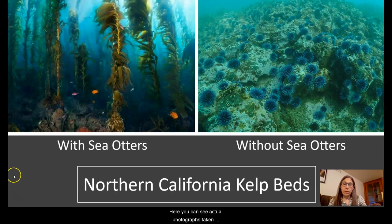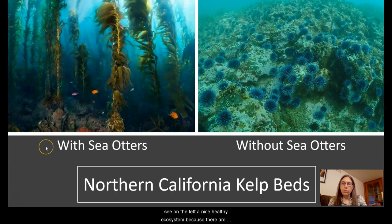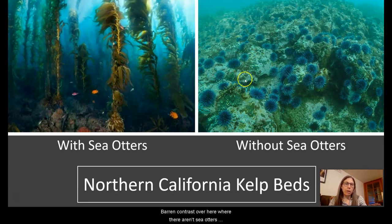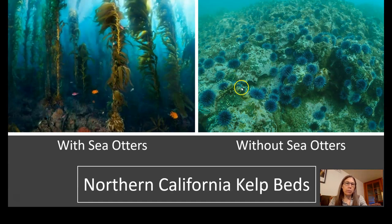Here you can see actual photographs taken underwater in Northern California kelp beds. On the left is a nice healthy ecosystem where sea otters are present. On the right is a very barren contrast where there aren't sea otters — almost no kelp, basically just a lot of sea urchins.